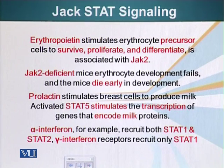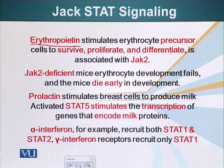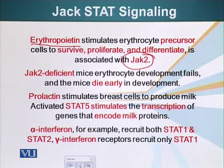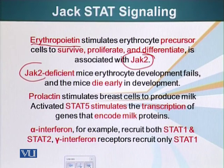Some examples of JAK-STAT signaling proteins: erythropoietin stimulates erythrocyte precursor cells to survive, proliferate, and differentiate, and it is associated with JAK2. Erythropoietin basically stimulates the cells that are going to make red blood cells. It is also given clinically to people who have difficulty making red blood cells. JAK2-deficient mice have developmental abnormalities and die very early in development, because mammals cannot survive without red blood cells.